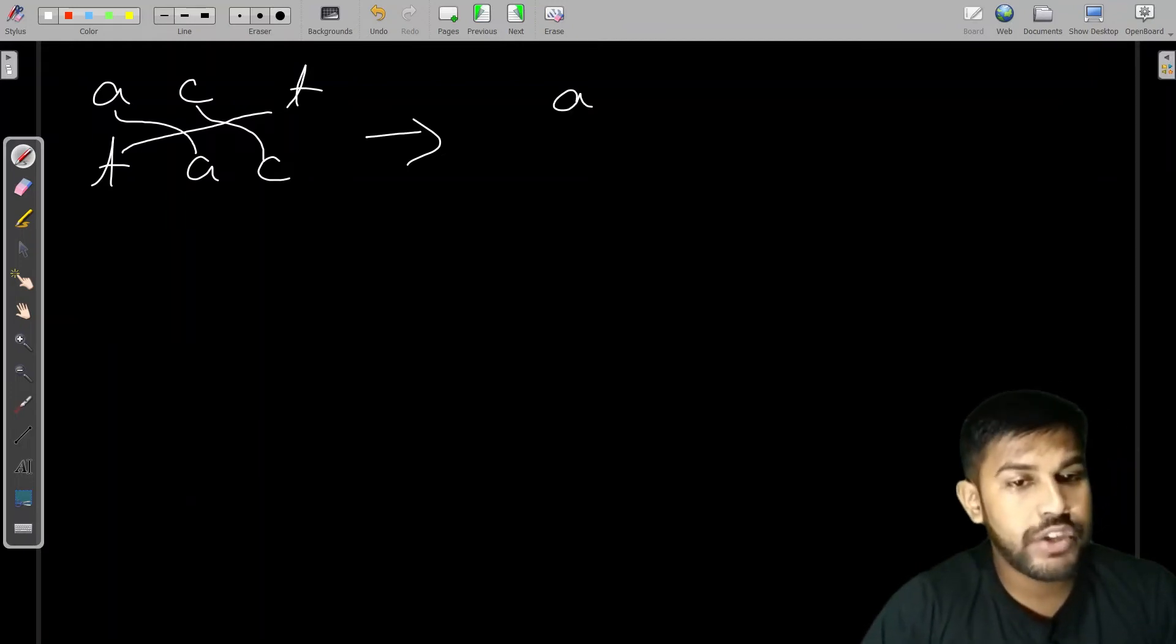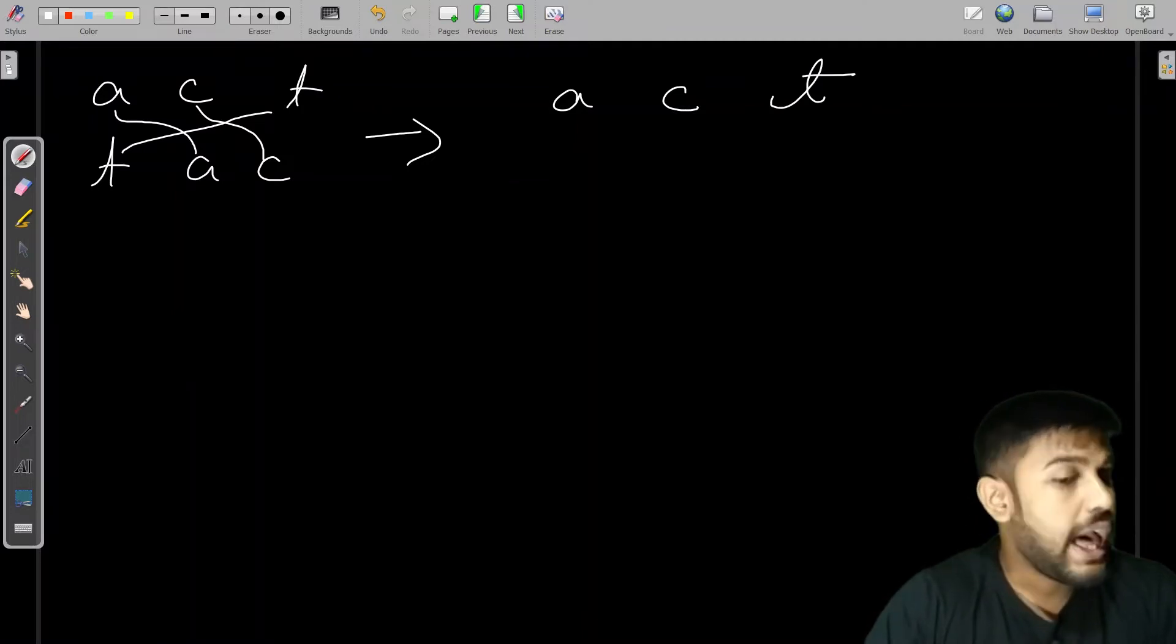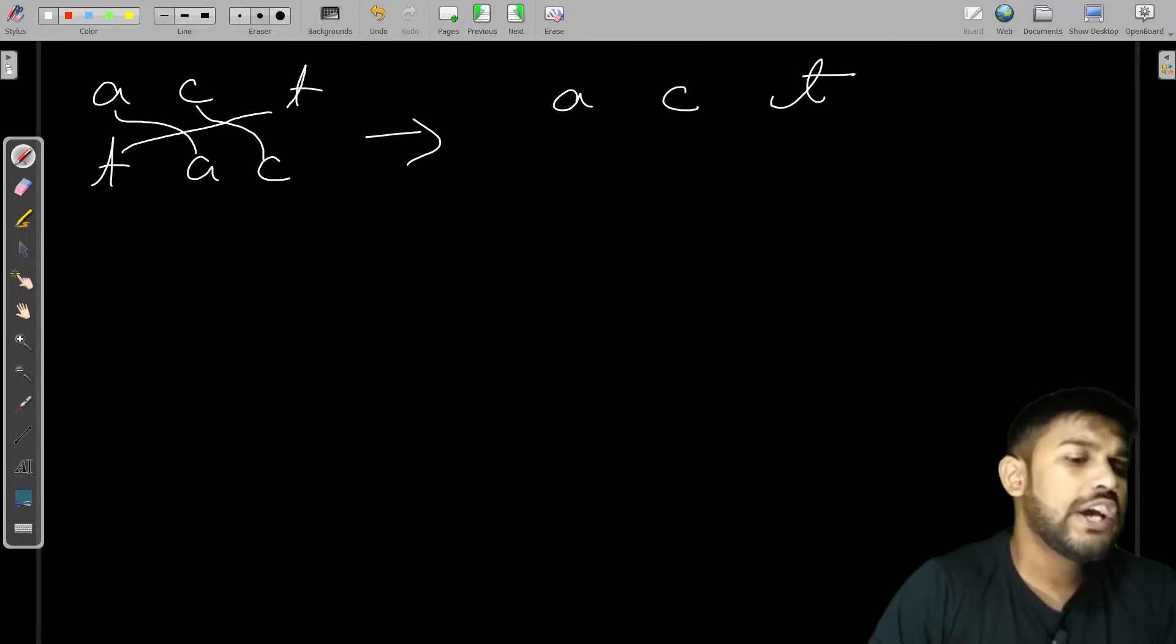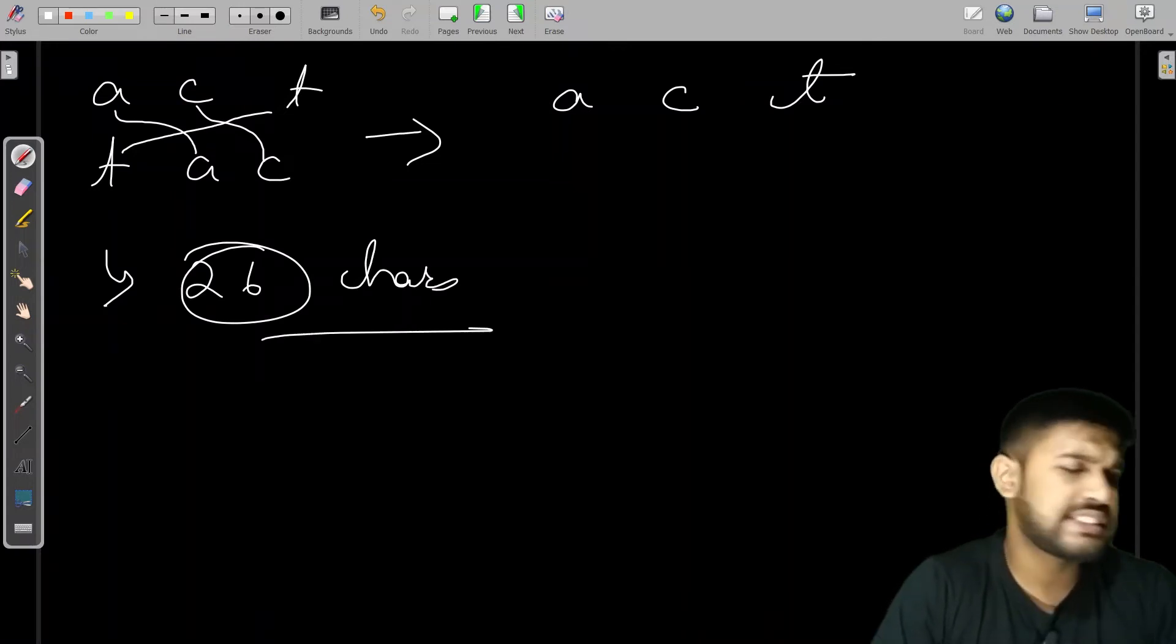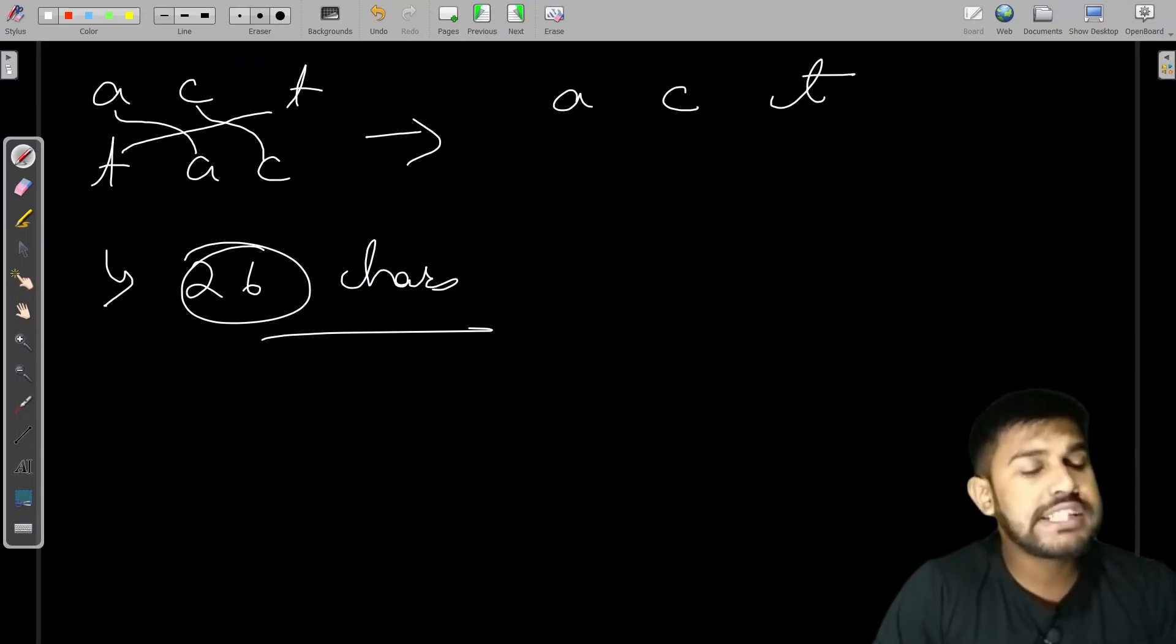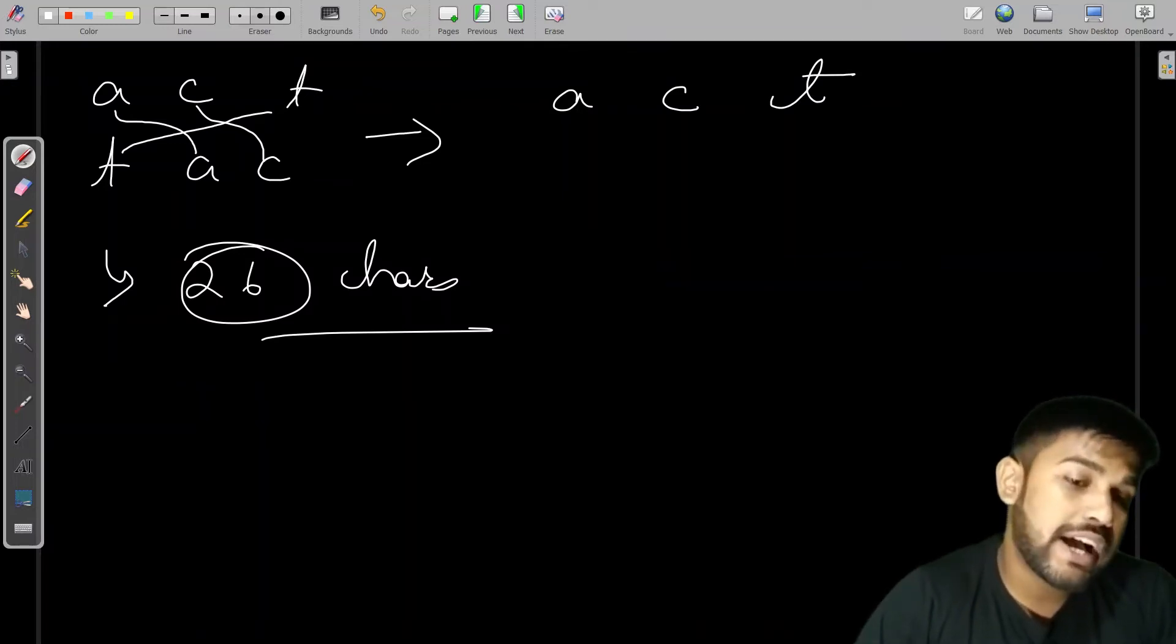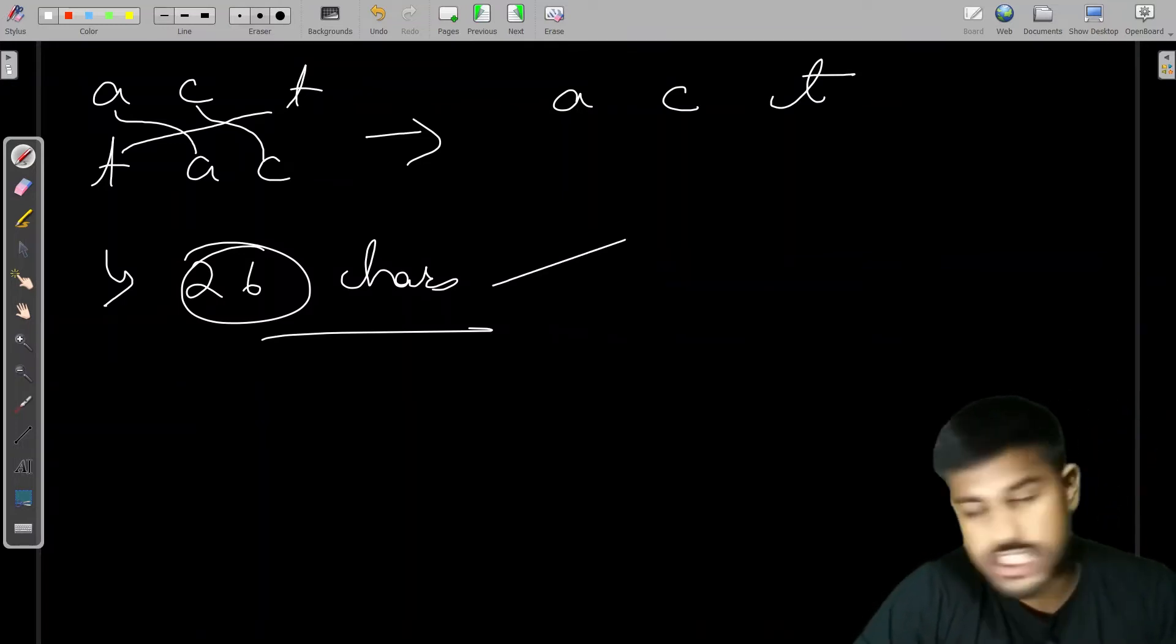How many different letters do we need to store the frequency for? We need to just store the frequency of 26 characters. Just 26 characters, just lowercase. If it were uppercase as well, it would have been 26 into 2, that is 52. But as it is only lowercase, we would have the number of characters as just 26.